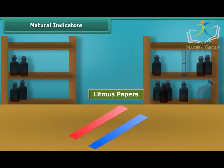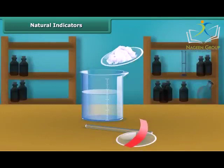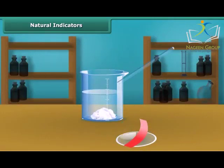Litmus is a natural indicator. It is extracted from lichens. It has a purple color in distilled water. It is available in the form of a solution or litmus papers. You can test the nature of a solution by litmus.